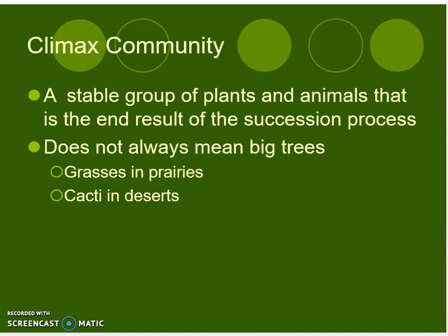After secondary succession, the climax community is formed — a stable group of plants and animals that is the end result of the succession process. It does not always mean big trees. For example, grasses in prairies or cacti in deserts.